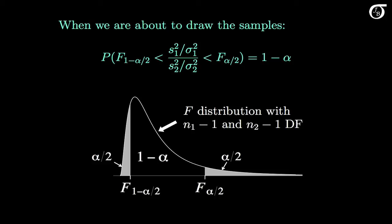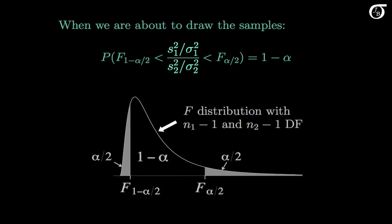I've drawn in an F distribution here. F sub alpha over 2 is the F value that has an area to the right of alpha over 2, and F sub 1 minus alpha over 2 is the F value that has an area to the left of alpha over 2. The probability that this quantity in the middle takes on a value between these two F values is 1-alpha.